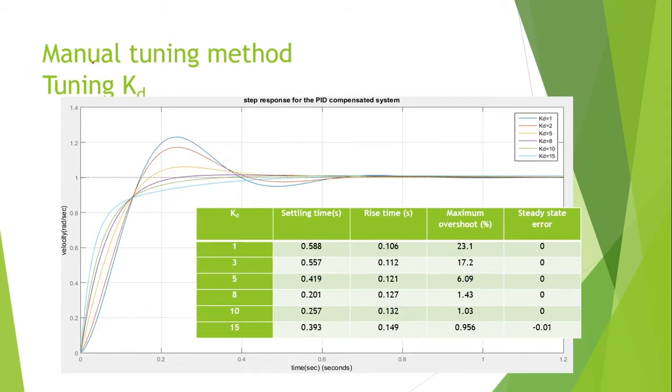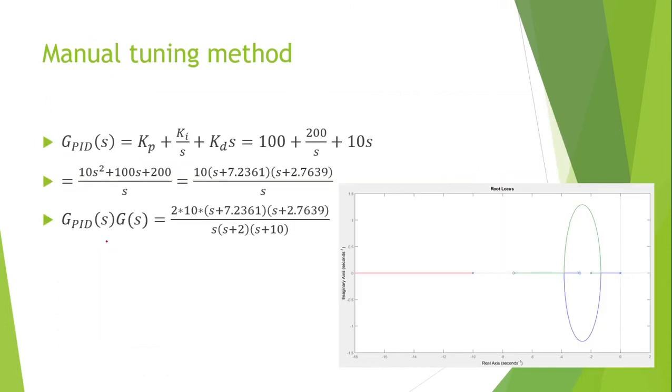Last, we tune the Kd to improve the overshoot performance. You can notice that the values of 8 and 10 are optimal, but we choose 10 because it gives lower overshoot. Of course, the settling time and rise time also meet our requirements.